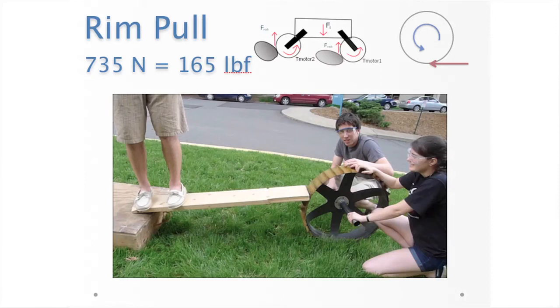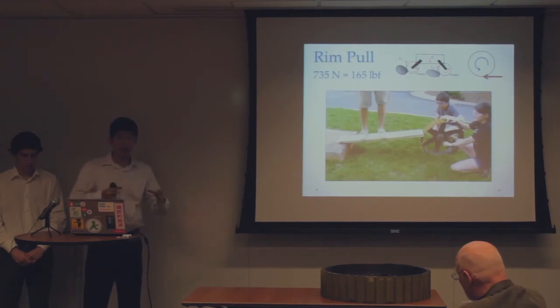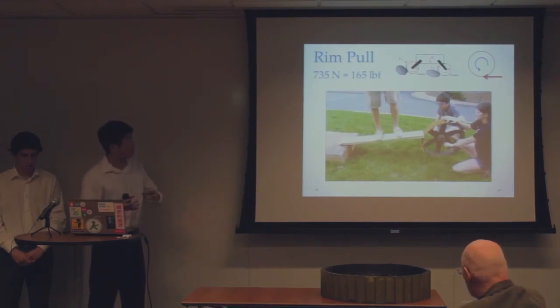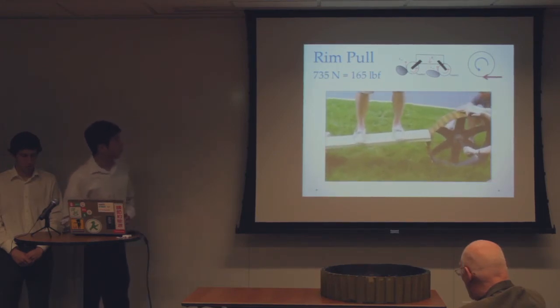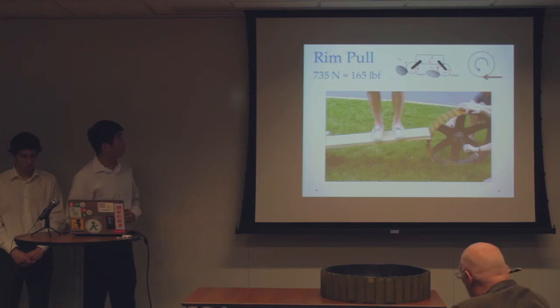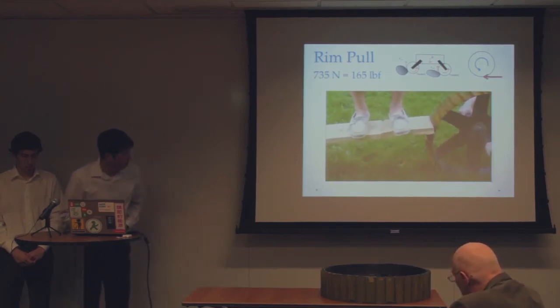The second one is the rim pull. It's when if all four wheels had rocks under them and they would climb over the rocks at the same time. It represents a tangential force on the rim of the wheel. We calculated it to be around 165 pounds. There is me loading it.